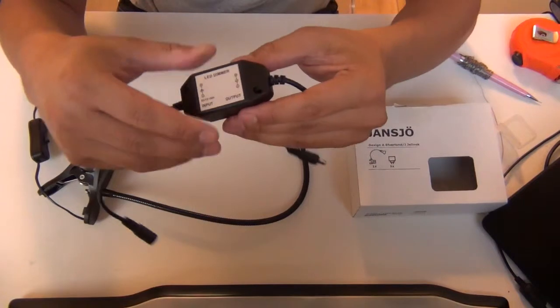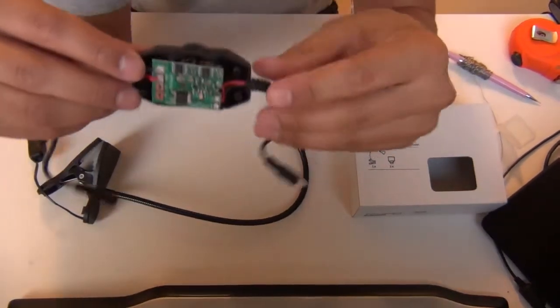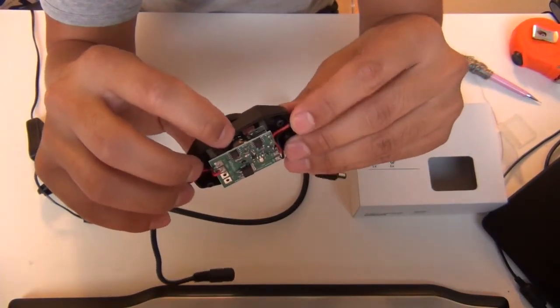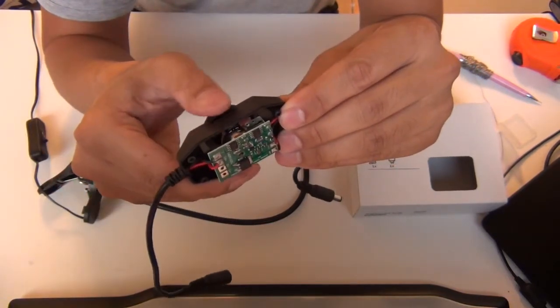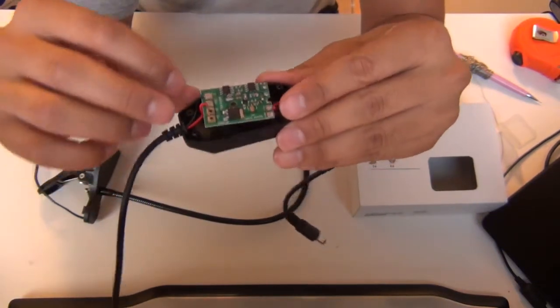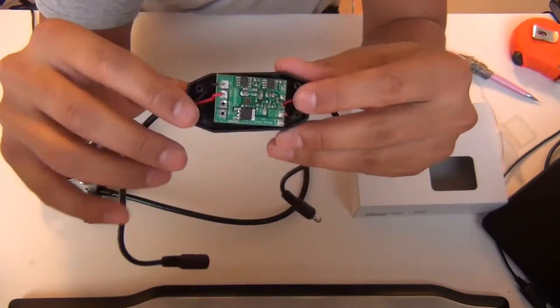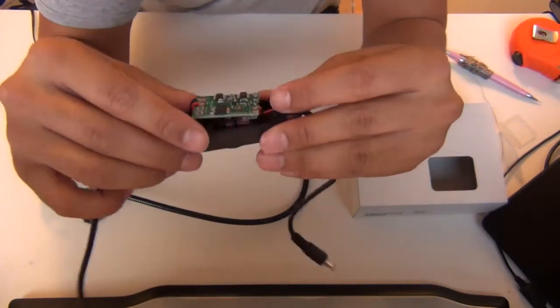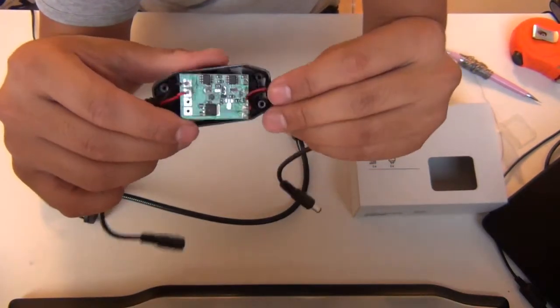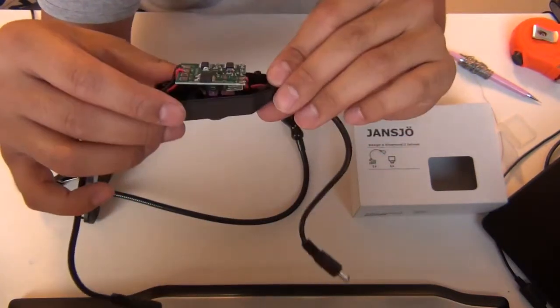I already opened the screws so I can show you the inside and actually it's quite easy. This is the circuit and there you see the potentiometer. When I turn this knob the potentiometer will change its value.